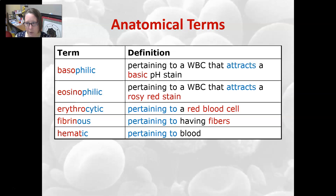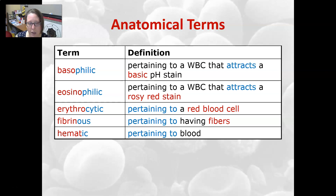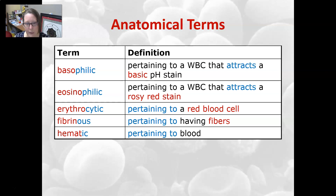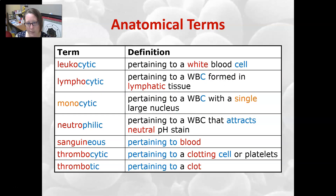Let's look at a few anatomical terms. Basophilic is pertaining to a white cell that attracts a basic pH stain — your basophils actually have granules that stain really dark. Eosinophilic means pertaining to a white cell that attracts a rosy red stain, so those granules are rosy red — that is your eosinophil. Erythrocytic means pertaining to a red blood cell or erythrocyte. Fibrinous means pertaining to having fibers — in our context, those are the fibrin fibers developed when a clot forms. Hematic means pertaining to blood, because hemato is blood. Leukocytic means pertaining to a white blood cell, since leuco means white.